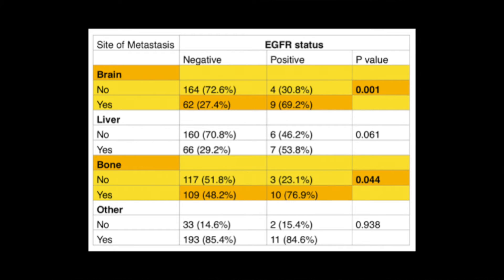As for liver metastases, this was also shown to occur more frequently in the EGFR positive group, by 24%. However, it was not quite there with regards to statistical significance, so this would be something that would be important to look into in a future study.